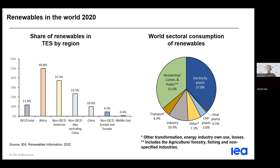Concerning the sectoral consumption on the right-hand side of the slide, the green slice is mainly composed of the traditional use of biomass. The electricity plants slice is what we should pursue to expand, since we would like to electrify the final consumption sector as much as possible and thus decarbonize this sector.